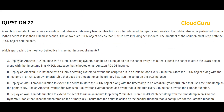Next question — pause and read carefully. You need a solution that retrieves data every two minutes from an internet-based third-party web service, for example exchange rates. Each data retrieval is performed using a Python script in less than 100 milliseconds. The result is a JSON object of 1 KB including sensor data. The requirement is to store both the JSON object and the date in the most cost-effective way.